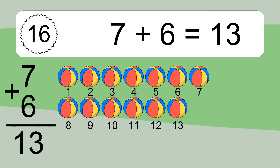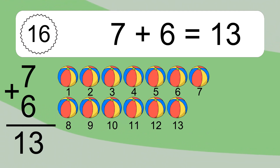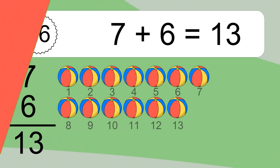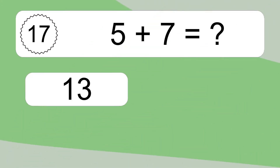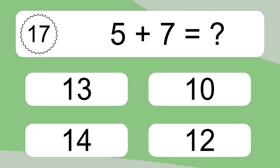Let's count it. 1, 2, 3, 4, 5, 6, 7, 8, 9, 10, 11, 12, 13. 5 plus 7 equals what?